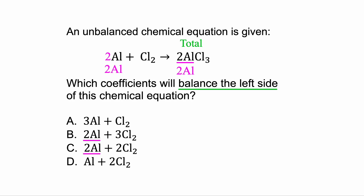Only B and C have that, so let's eliminate A and D. Next, how many Cl atoms do we have? When you have a subscript number, you always multiply it with the coefficient in front. So two times three gives us six chlorine on the right side. Therefore we want six on the left. We need a coefficient of three, because three times two gives us six on the left — matching the six on the right. So three Cl2 is what we need. Answer B has all the right coefficients. Start on the right side, count your totals, then work backwards to find the coefficients.